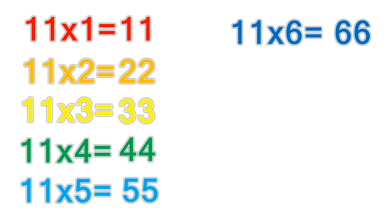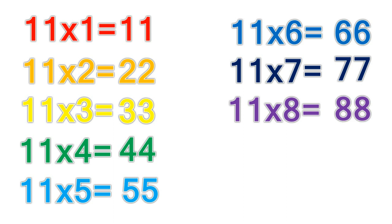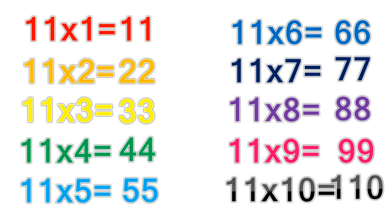11 times 7 equals 77. 11 times 8 equals 88. 11 times 9 equals 99. 11 times 10 equals 110.